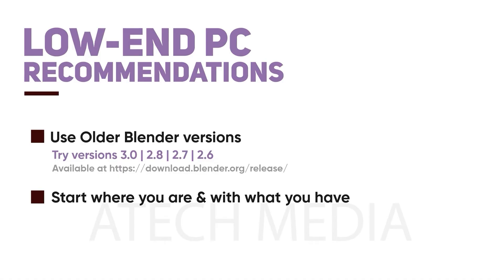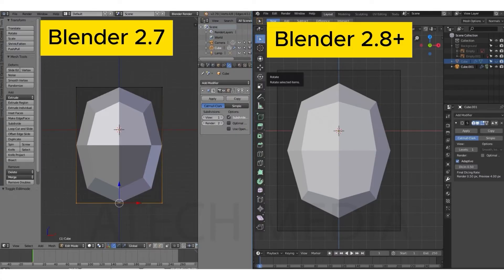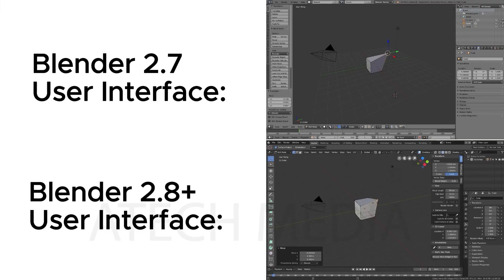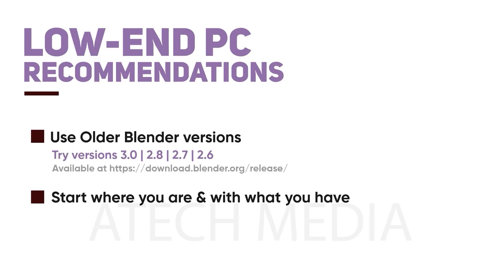Surprisingly, Blender version 2.7 actually ran on my mom's Intel Pentium PC with 2GB RAM — something I have personally tested. So if you are stuck with current versions not working, you might need to try the older versions. Unfortunately, Blender changed their UI in version 2.8, so if you use anything earlier than 2.8 you may not be able to follow this tutorial's UI closely. The foundation of Blender is still the same, just the UI is a little different. Also, 2.8 introduced a new render engine called Eevee, which was not in earlier versions.